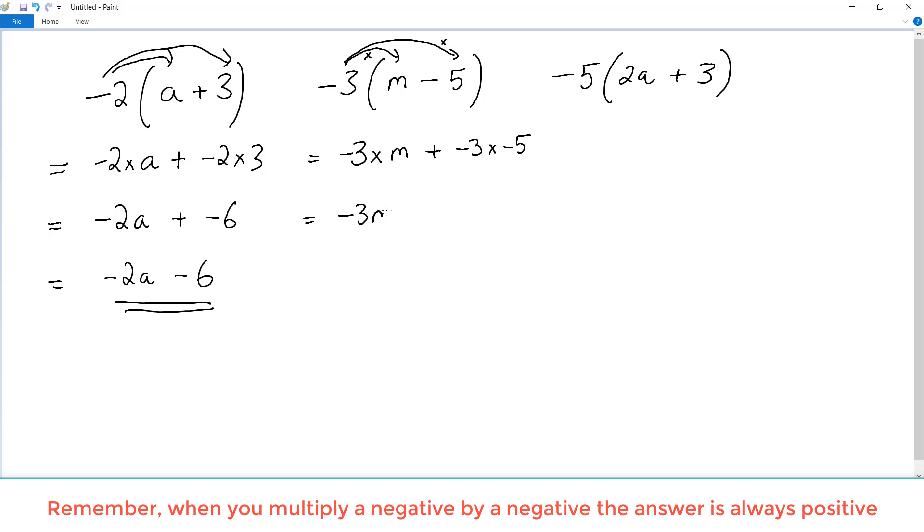So this is negative 3m, and negative 3 times negative 5 is 15. So this is our answer. So that was a little bit different.